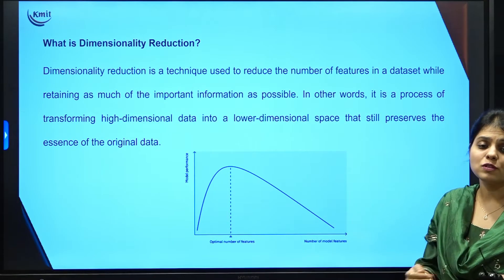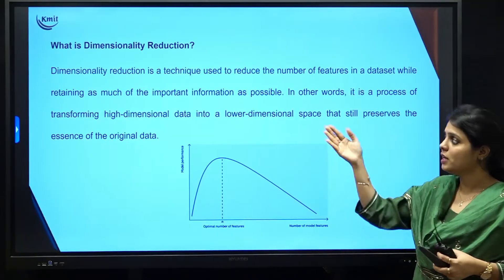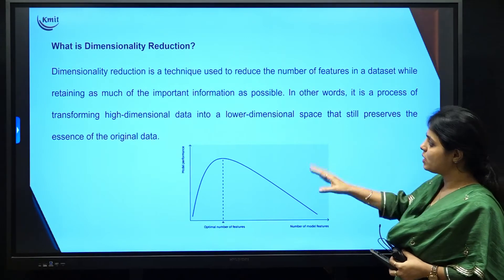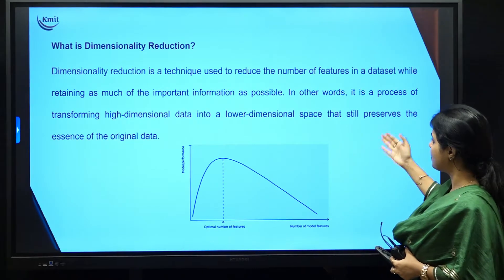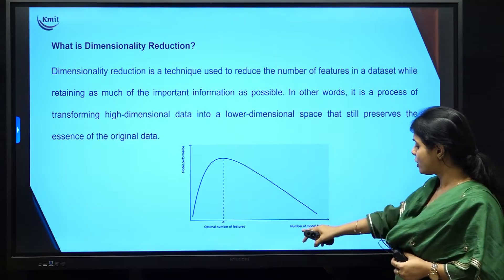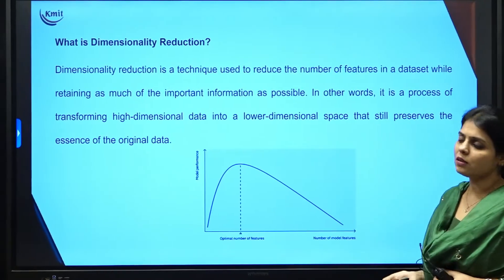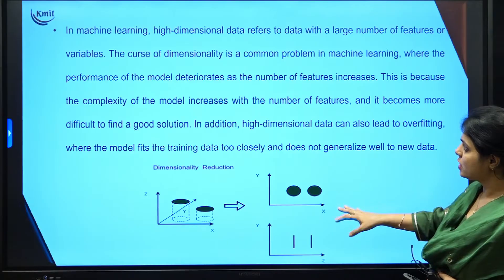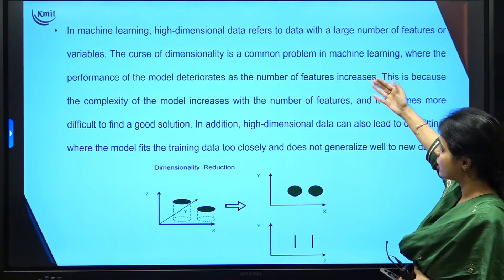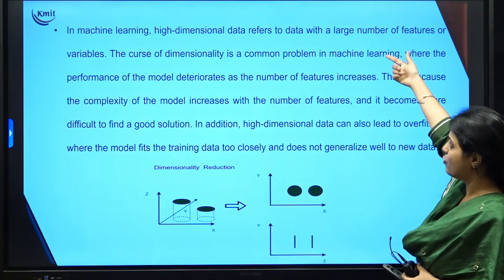We are not supposed to remove features that cause us to lose important information. We retain the important information by adopting different dimensionality reduction techniques. In other words, it is the process of transforming high-dimensional data into a low-dimensional space that still preserves the essence of the original data. In machine learning, high-dimensional data refers to a dataset with a large number of features or variables.